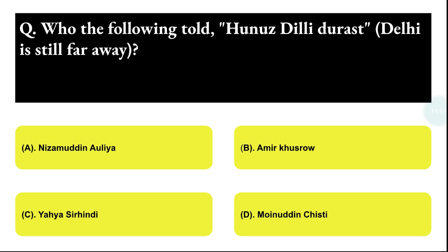Next question: who among the following said 'Dilli Dur Ast', meaning 'Delhi is still far away'? Option A: Nizamuddin Auliya, Option B: Amir Khusrow, Option C: Yahya Sirhindi, Option D: Moinuddin Chisti. The correct answer is option A, that is Nizamuddin Auliya.